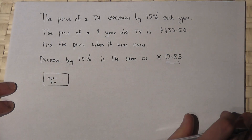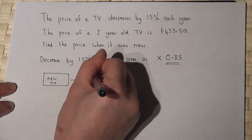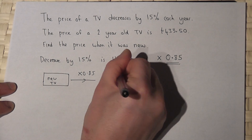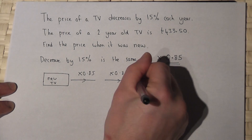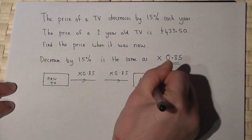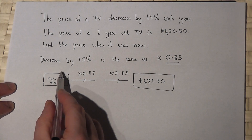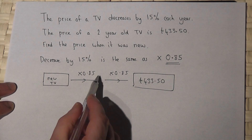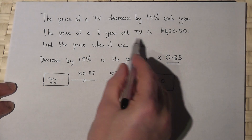After one year, the new price is multiplied by 0.85, and after the second year it's multiplied by another 0.85. So this must equal £433.50. Every year it goes down by 15%, so times by 0.85, times by 0.85 — this is the price after two years.